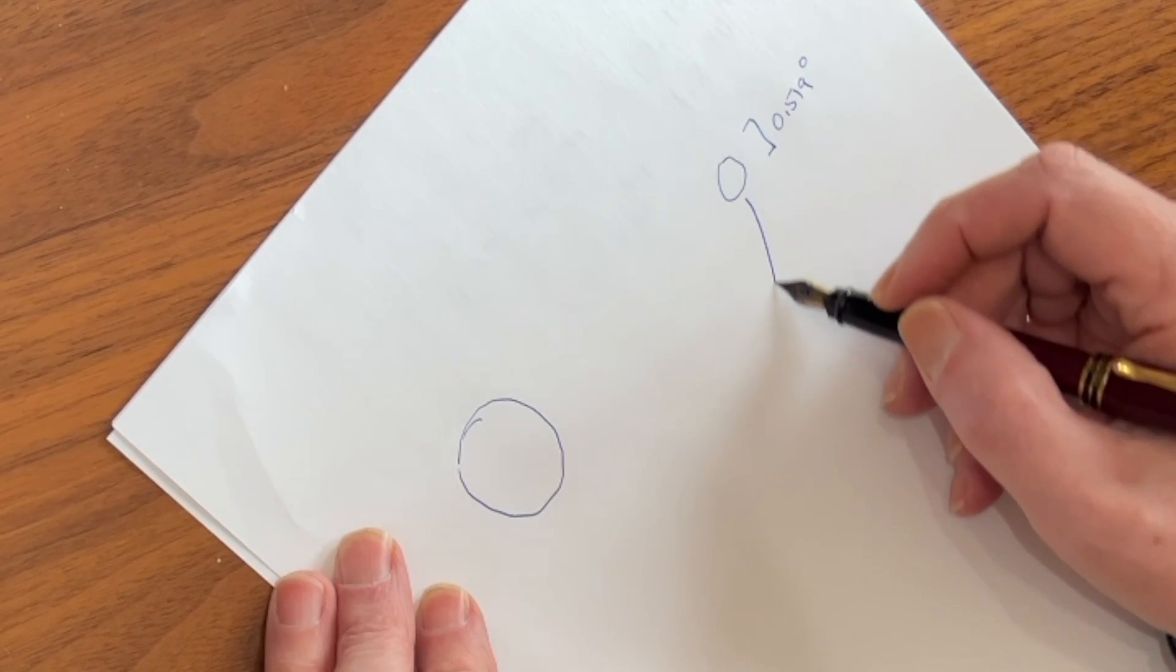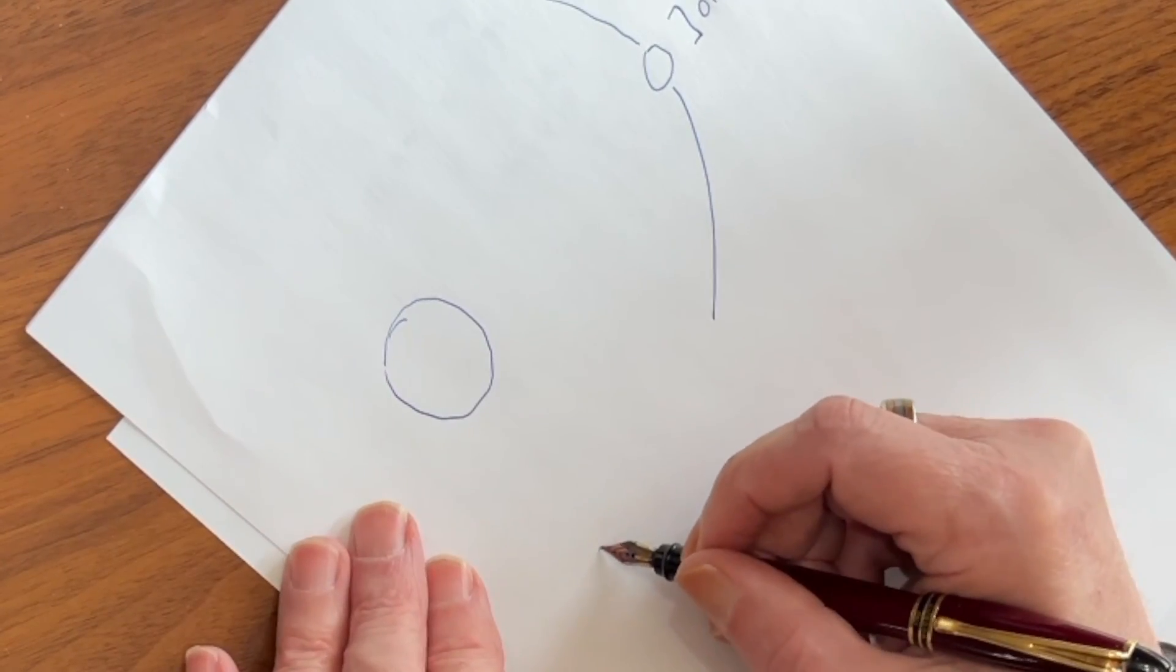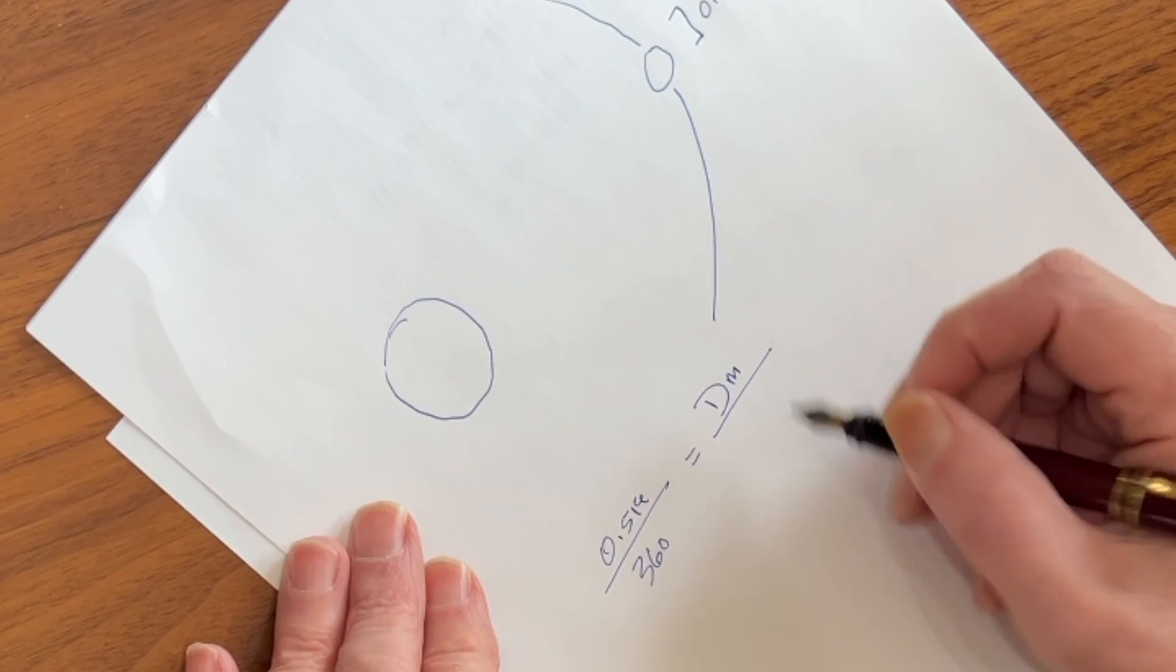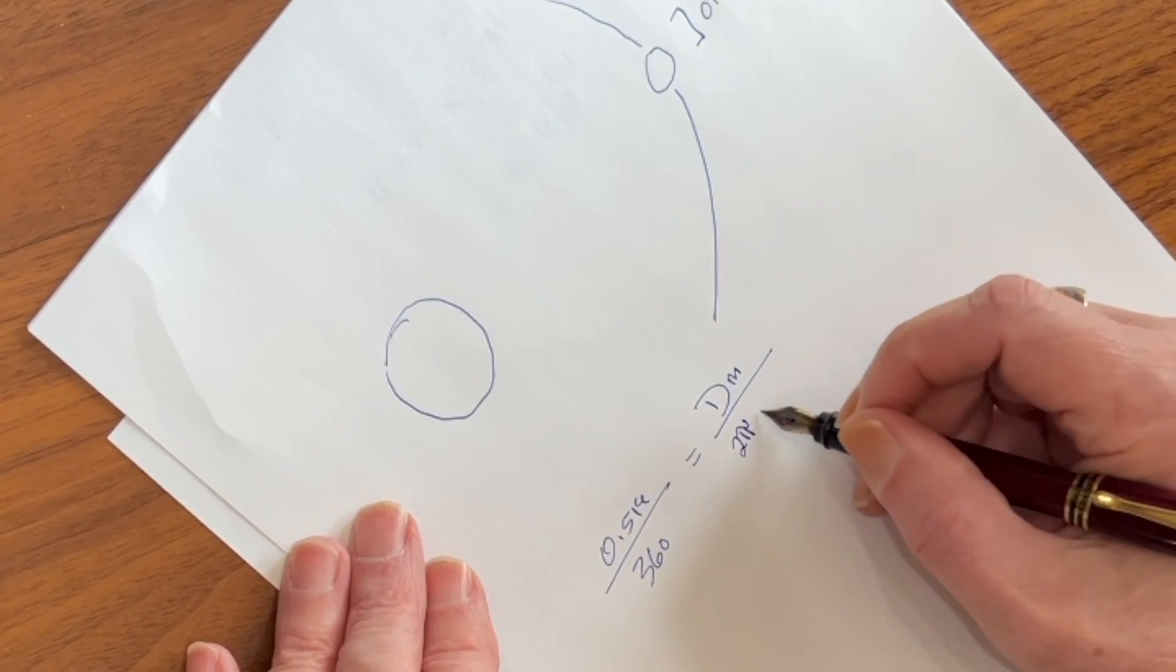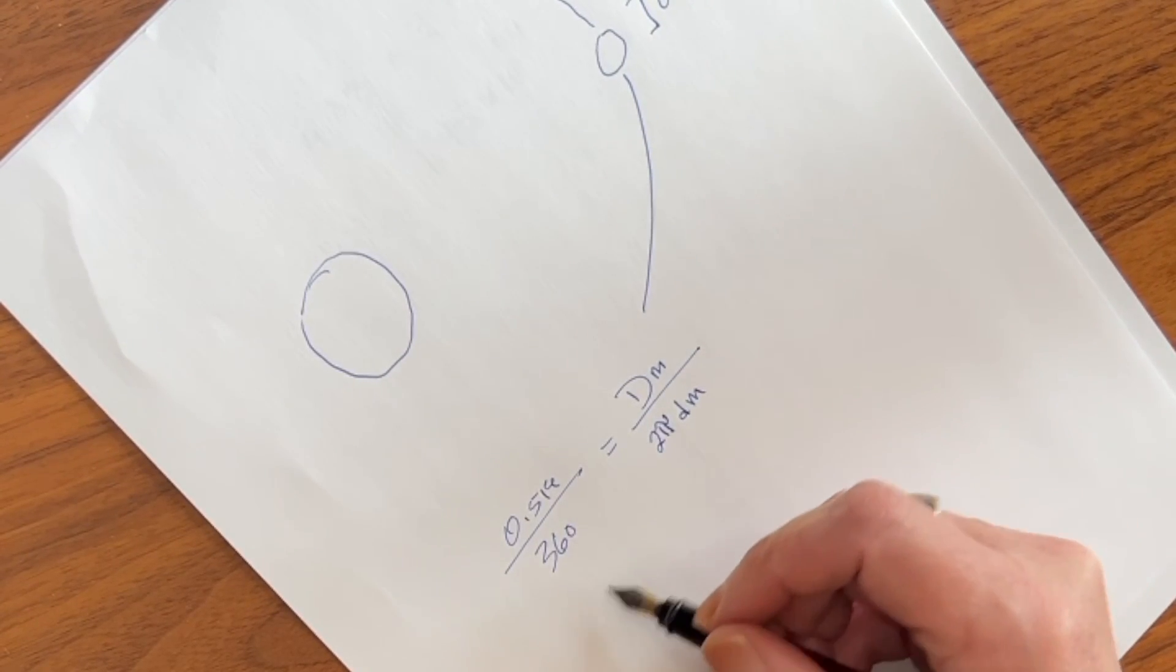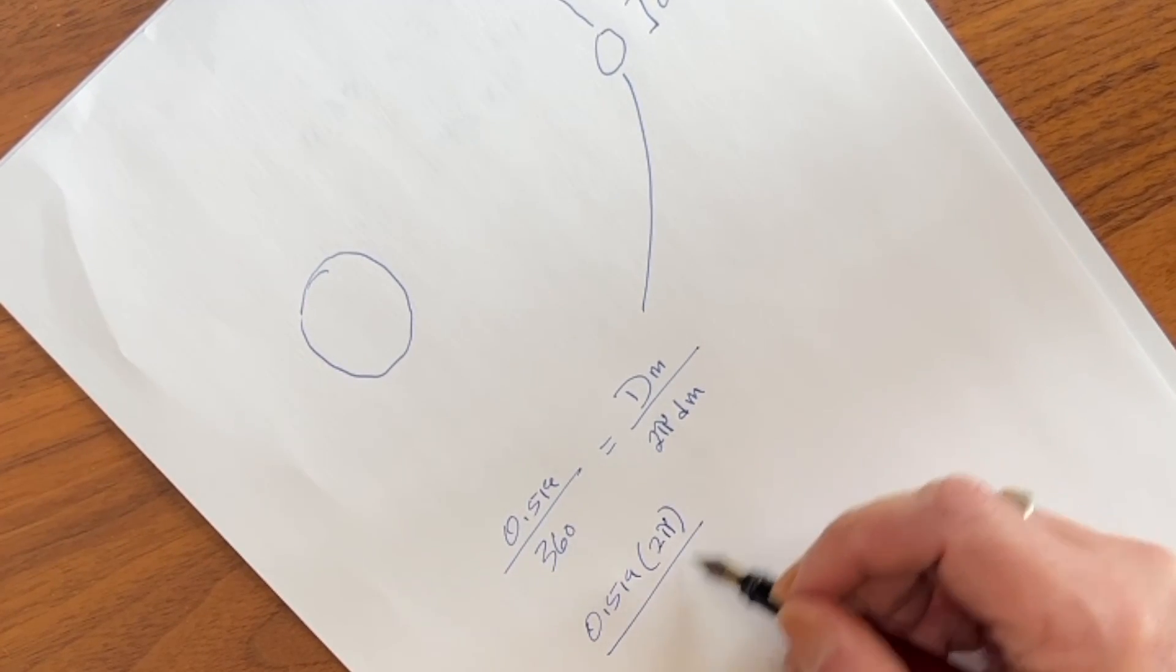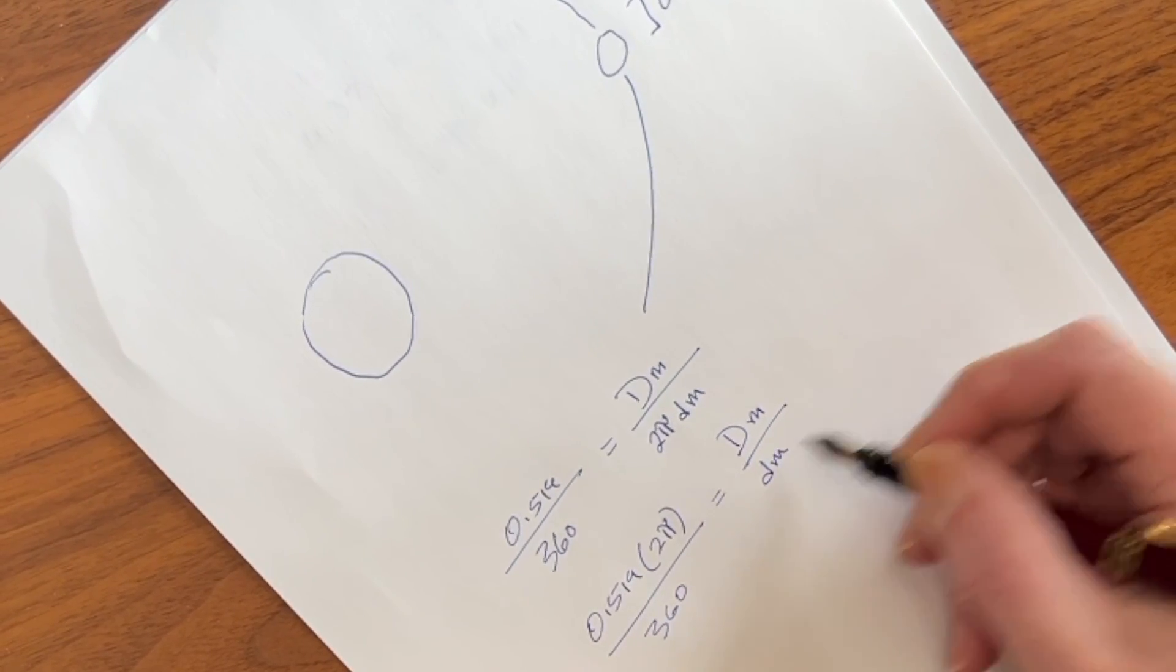Now that is over the entire orbit of the moon. So what we have is 0.519 over 360 equals the diameter of the moon over the orbit of the moon. Well, what's the orbit of the moon? It's 2 pi times the distance to the moon. So if we multiply both sides by 2 pi, what we end up with is 0.519 times 2 pi over 360 equals the diameter of the moon over the distance to the moon.